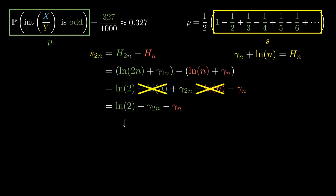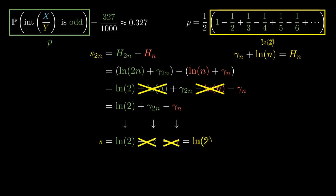As we let n approach infinity, the log of 2 just stays as the log of 2. But the gamma sub 2n approaches gamma, and the gamma sub n approaches gamma as well. S sub 2n approaches S, since that's what it means when we take n to infinity, and the gammas cancel out. This tells us that S equals the log of 2.